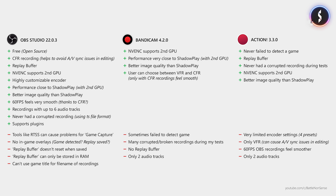Now how about Action. Unlike OBS and Bandicam it never failed to detect the game, it comes with a replay buffer, and unlike Bandicam it never corrupted the recording when I forgot to stop the recording before closing the game. Since version 3.3.0 you can offload the encoding to a second graphics card and get better image quality than with Shadowplay. However, the encoder options are very limited as you can only choose between a few different presets, and I am not sure what a bitrate of 100% is supposed to mean. It only supports recording with a variable frame rate, so 60fps recordings don't feel as smooth as those from OBS and Bandicam when using CFR. And it only supports 2 audio tracks.